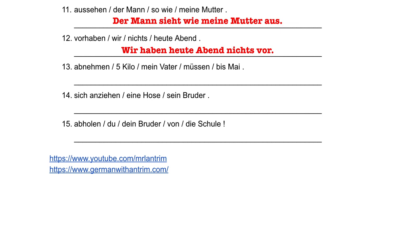In number 13, we have the verb nehmen again. Nehmen is normally an irregular verb — with mein Vater we would say nimmt — but we have a modal auxiliary, müssen. Which means we don't have to worry about that irregular form. We put the verb back together in the infinitive form abnehmen and place it at the end of the sentence, because we're conjugating müssen and not the separable prefix verb. Mein Vater muss bis Mai fünf Kilo abnehmen — my father must lose five kilograms by May.